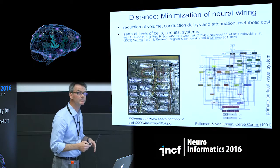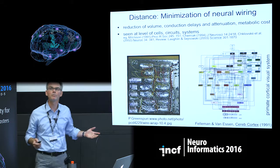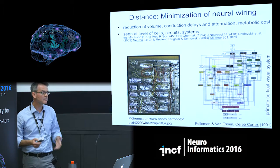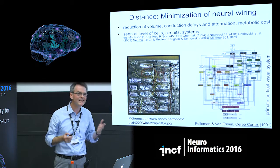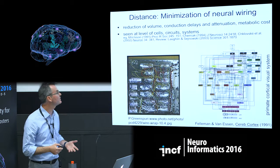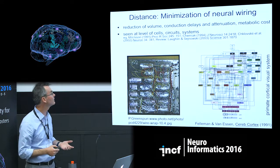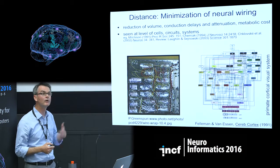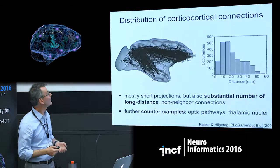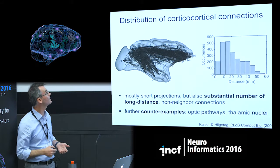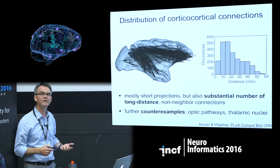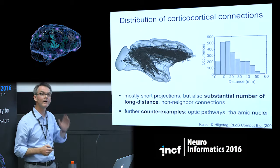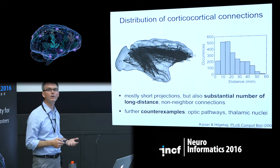Let me start with wiring principles. The first and probably most intuitive one is wiring minimization — constraining connectivity by distance. This is intuitive since the brain is a physically embedded object, so it makes sense that wiring should be reduced, also taking inspiration from technical examples such as the wiring of microcircuits. Indeed, there is some evidence for apparent wiring minimization in the brain; however, if you look at the actual distributions of projections, there is no strict minimization — many projections are among neighbors, but there's also a long tail of quite distant projections.